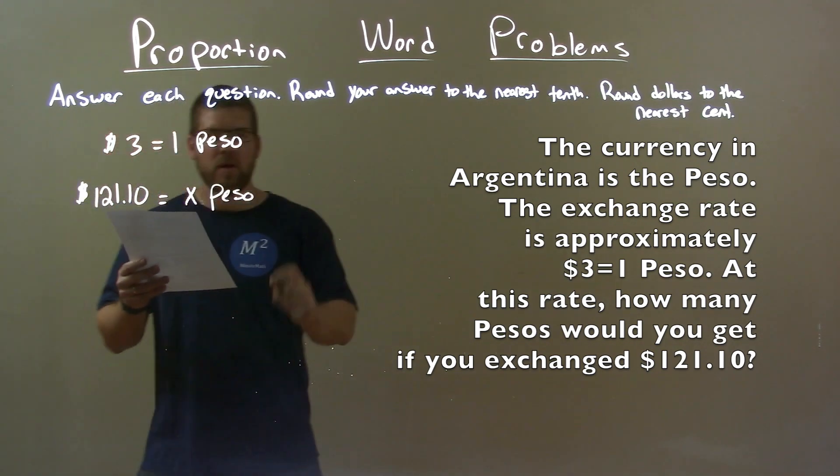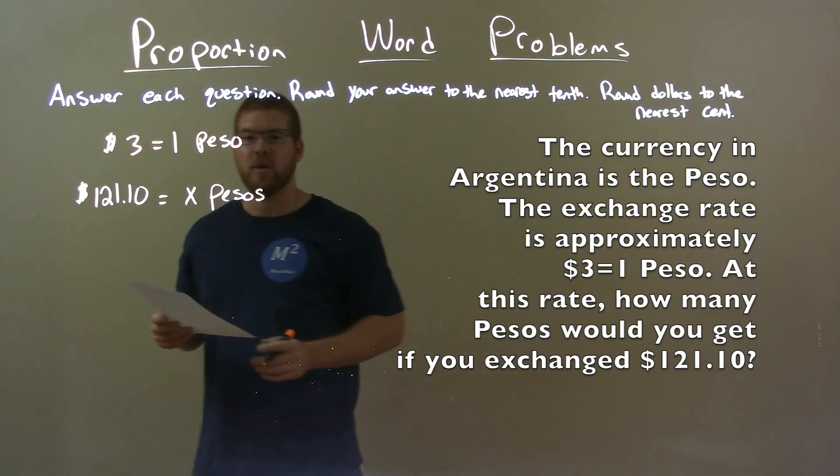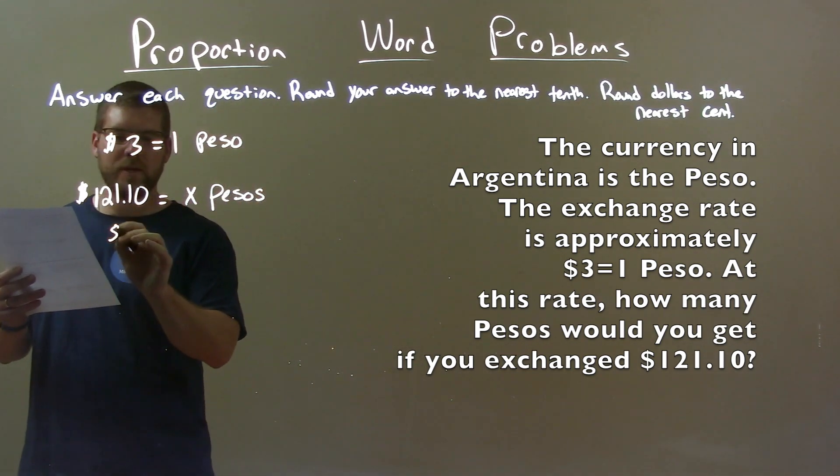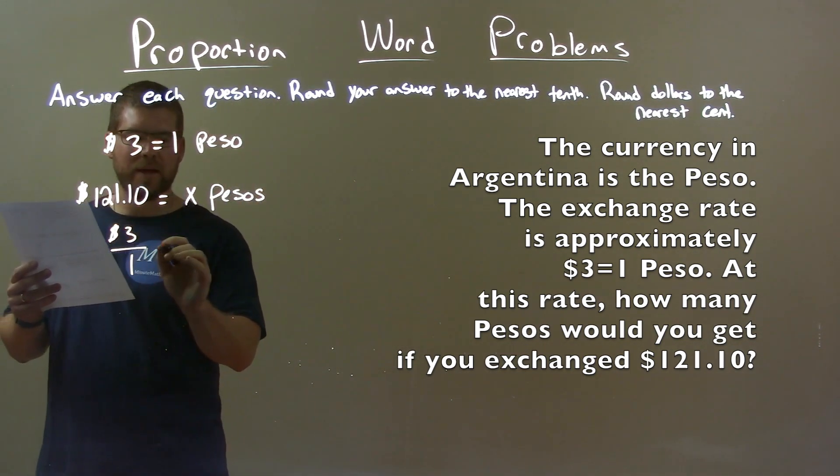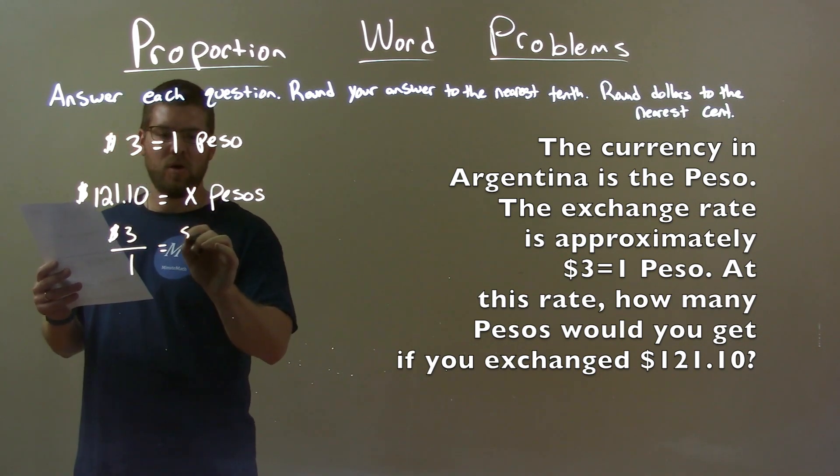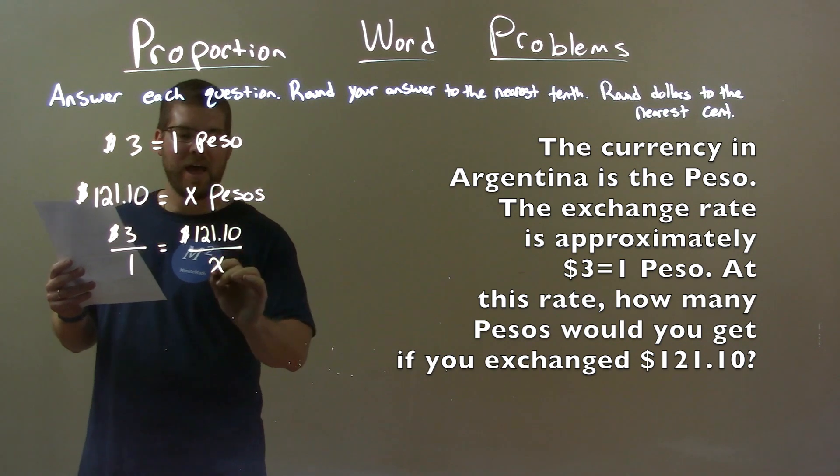Okay, so we want to find that variable X there. So let's set a proportion. Three dollars over one peso is equal to one hundred twenty-one dollars and ten cents over X pesos.